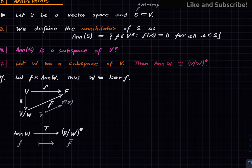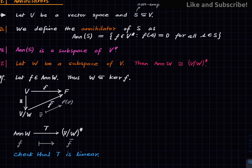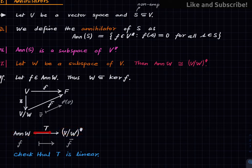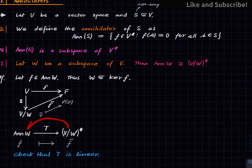What we have done is created a map T from the annihilator of W to the dual of V mod W, which starts with an element of the annihilator and produces f-bar as described by this diagram. One can check that capital T is a linear map. Our goal is to create an isomorphism, and so far we have a map in one direction; the approach is to create a linear map in the opposite direction so that it becomes the inverse of T.